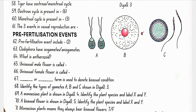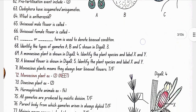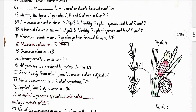Pre-fertilization events include gametogenesis and gamete transfer. Cladophora has isogametes. The male gamete in plants is called antherozoid. Unisexual male flower is called staminate; unisexual female flower is called pistillate. The terms homothallic or monoecious denote bisexual condition. In diagram 3: A is isogametes of Cladophora, B is heterogametes of Fucus, C is heterogametes of Homo sapiens. In diagram 4, the plant is Chara; X is the oogonium (female sex organ) and Y is the antheridium (male sex organ).